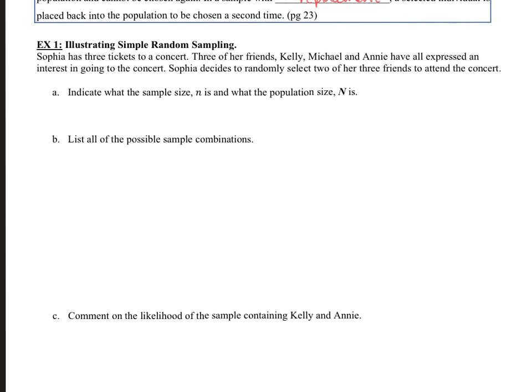Alright. So Sophia has three tickets to a concert. Three of her friends, Kelly, Michael, and Annie, all have expressed an interest in going to the concert. Sophia decides to randomly select two of her three friends to attend the concert, and that would be with her.